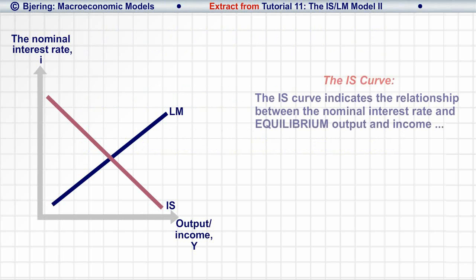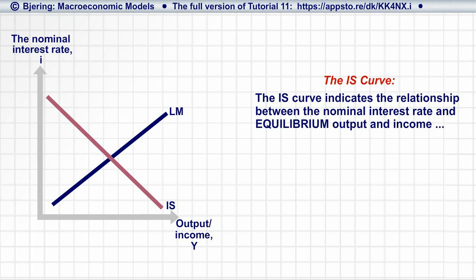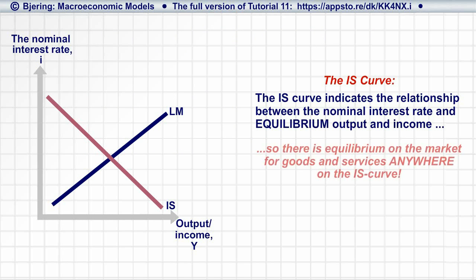The IS curve indicates the relationship between the nominal interest rate and equilibrium output and income, so there's equilibrium on the market for goods and services anywhere on the IS curve.